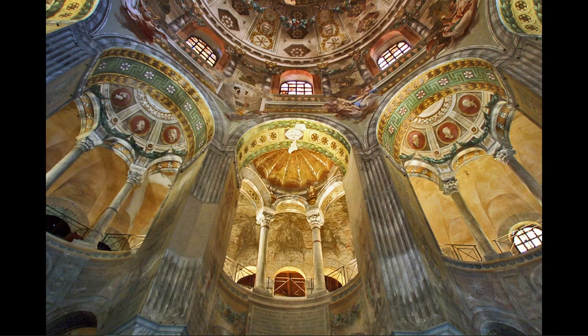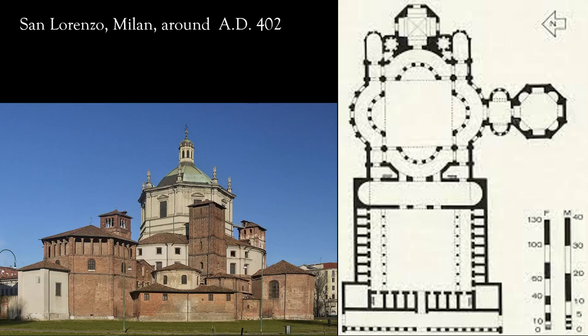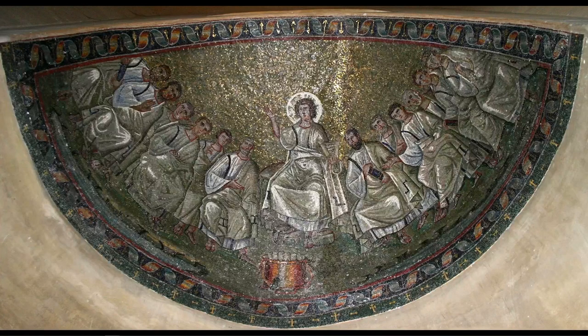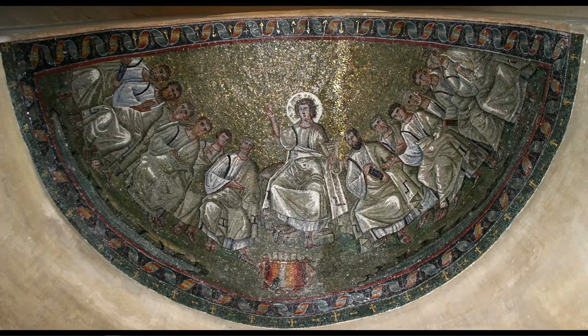San Lorenzo in Milan is also a good example of this church plan modelled on the Byzantine court. Here is the ground plan, and here is the apsidal mosaic of Christ in judgment, surrounded by the twelve apostles who are wearing imperial court robes with the purple band running down them.